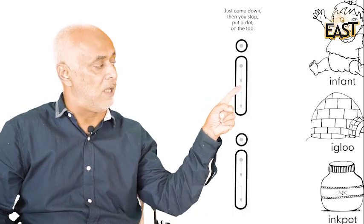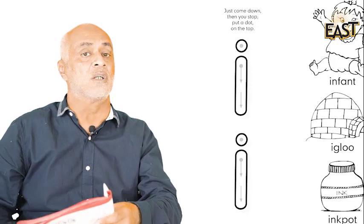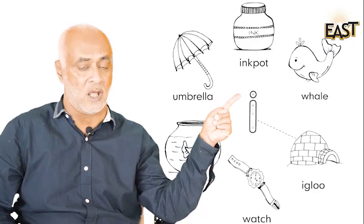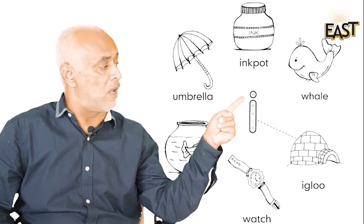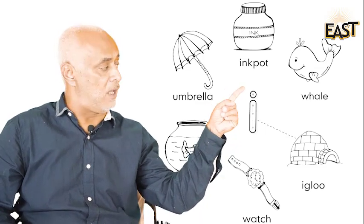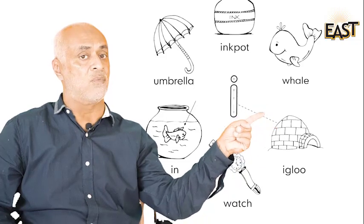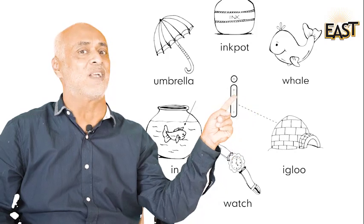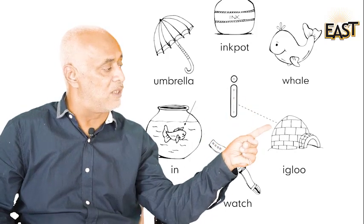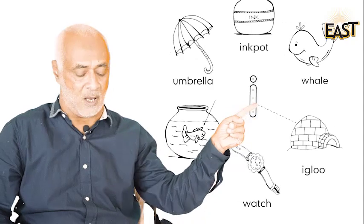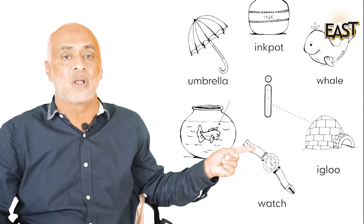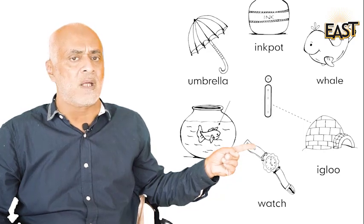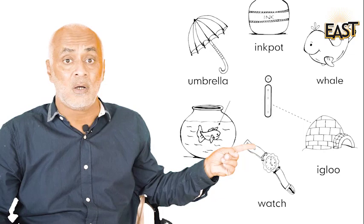Now let's try some more words. Look at this page. First we have igloo — the beginning sound of igloo is 'ee.' Very good! And what do we have here? A watch, watch, watch. What do you think — is the beginning sound of watch 'ee'?